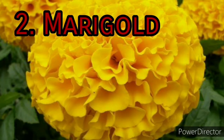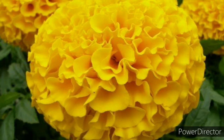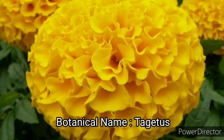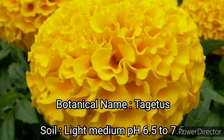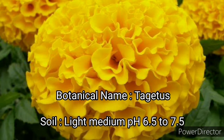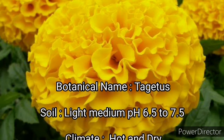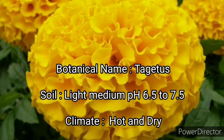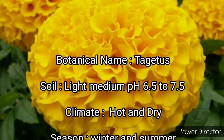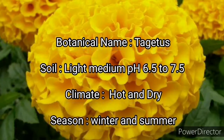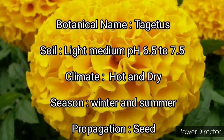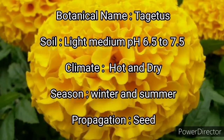The next flower crop is Marigold. Its botanical name is Tagetes. Soil required is light to medium and the pH is 6.5 to 7.5. Climate should be hot and dry, and the growing seasons are winter and summer.